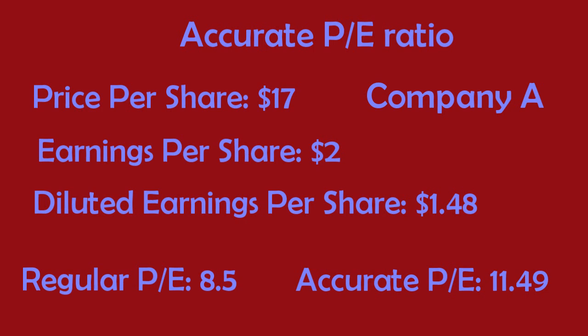The accurate EPS gives us $17 divided by $1.48, which equates to 11.49. So you're paying $11.49 for every one dollar of earnings, but before you thought you were only paying $8.50 for every one dollar of earnings. As you can see, using diluted EPS gives you a more accurate price-to-earnings ratio, and the P/E is a crucial ratio when analyzing a company's financial position.